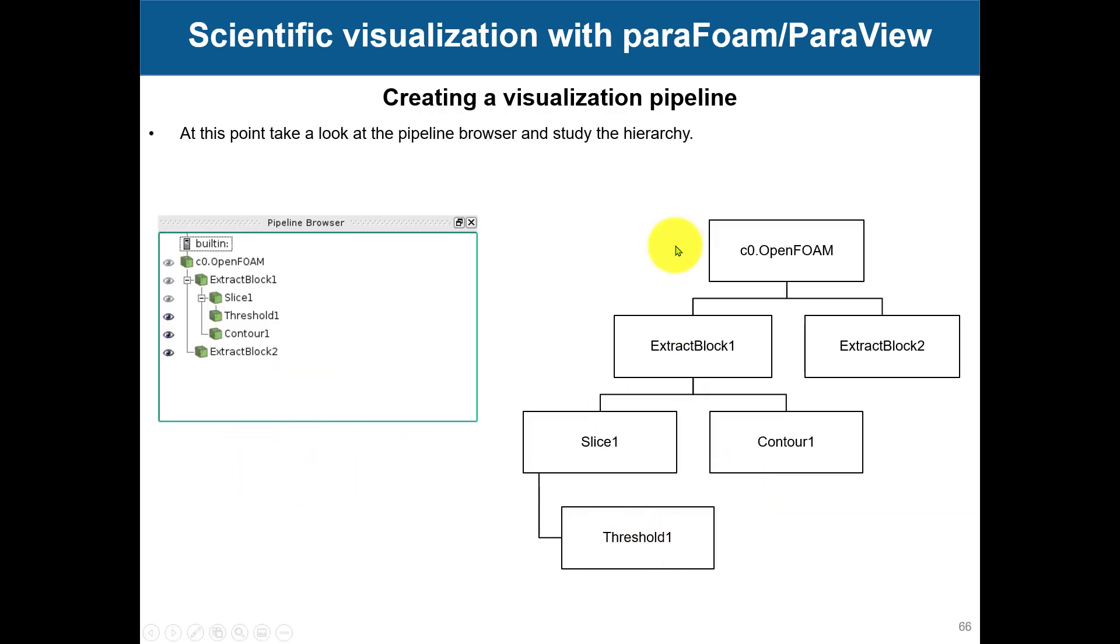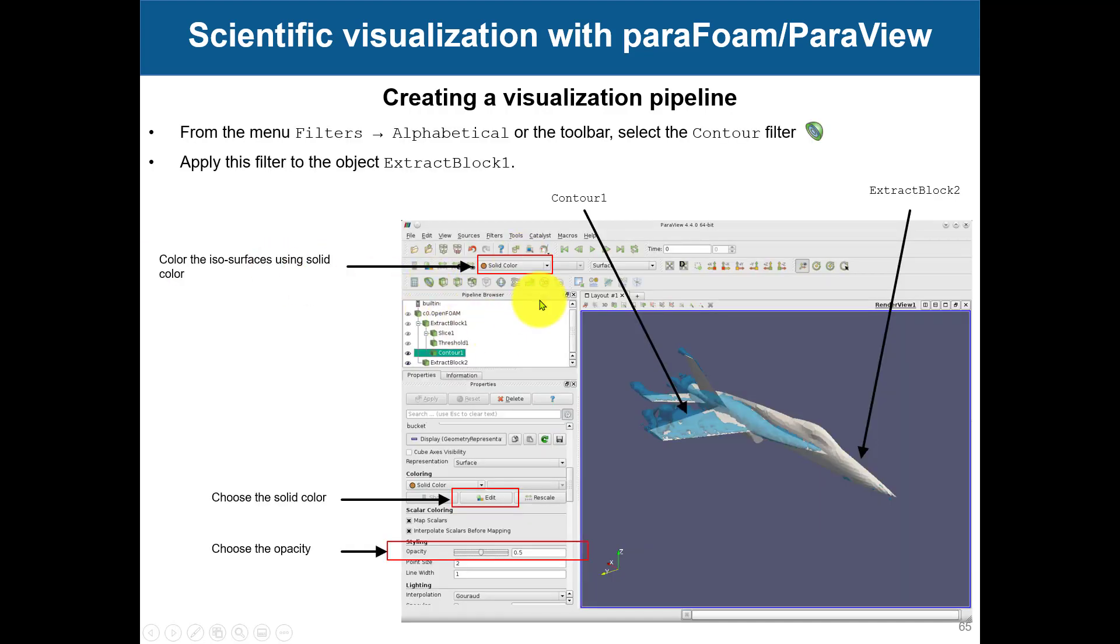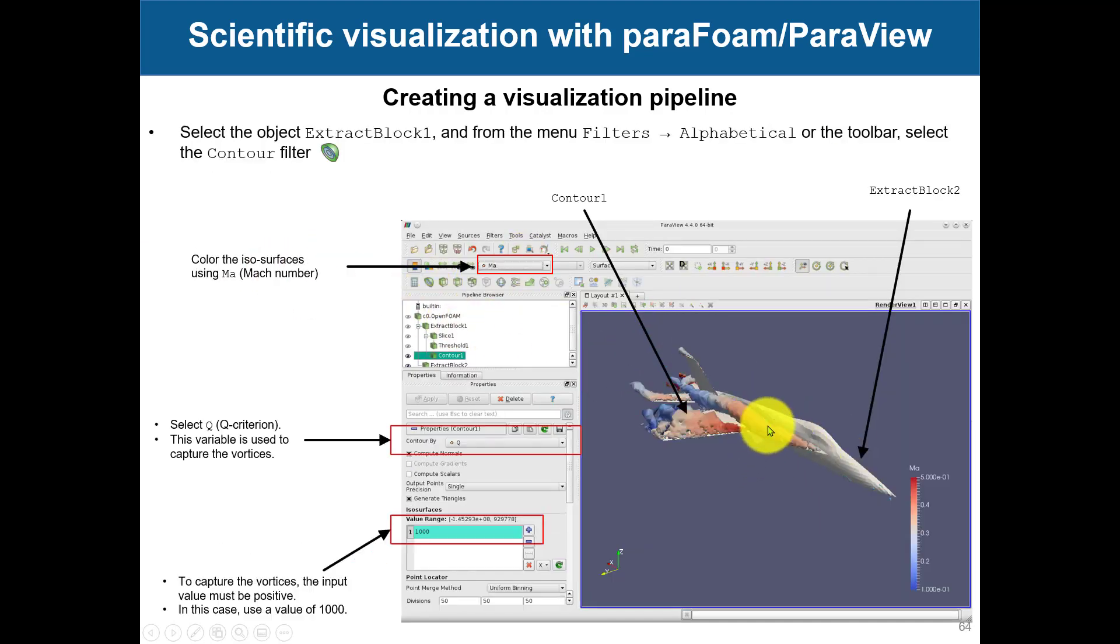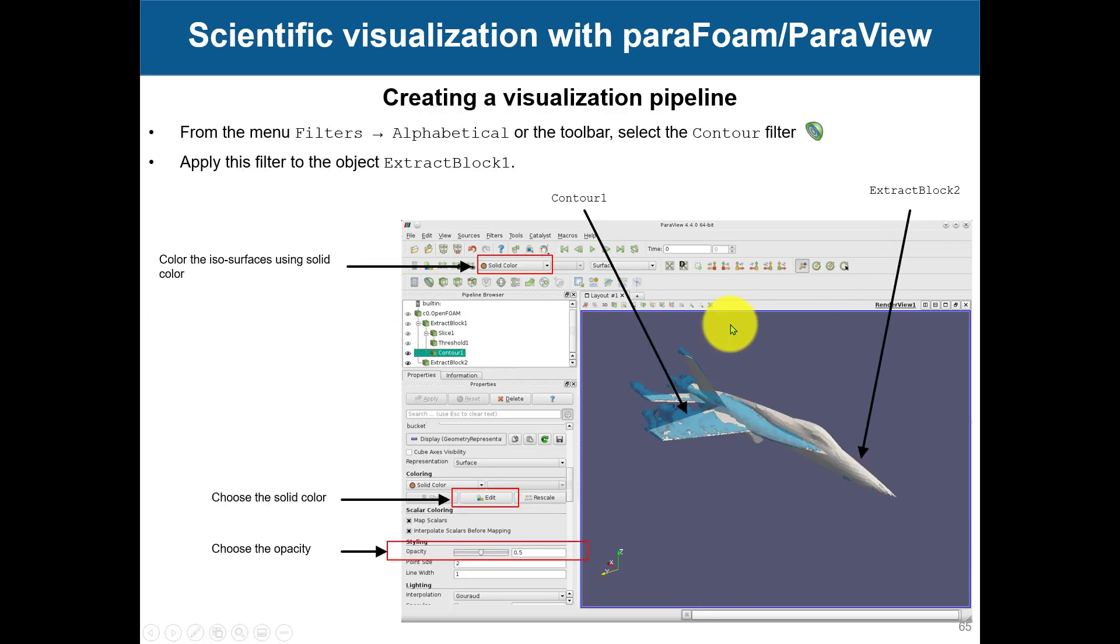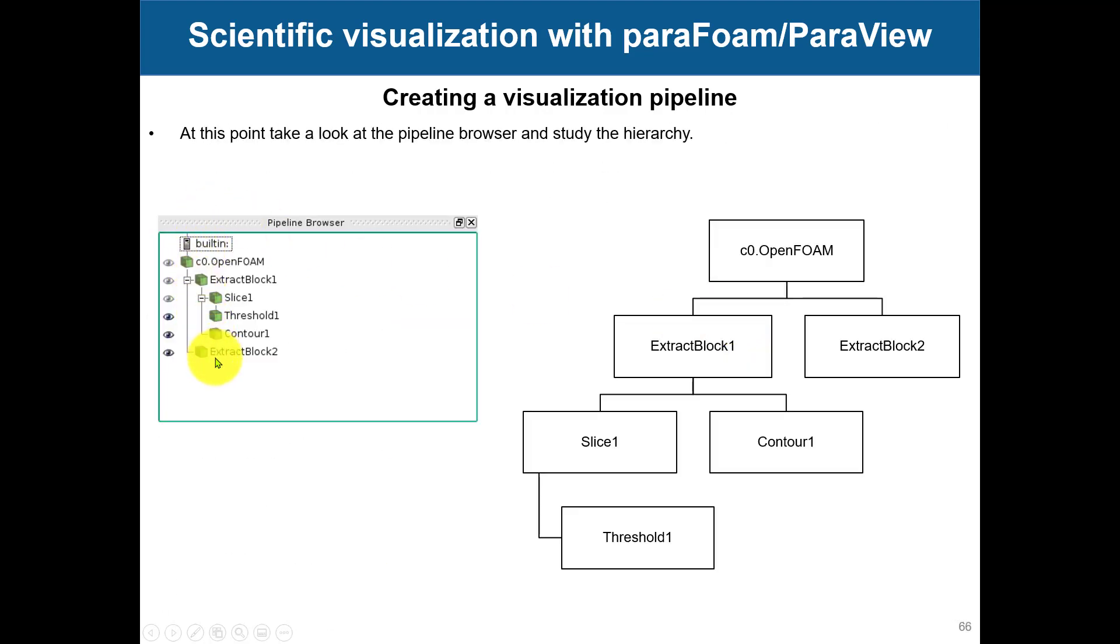And remember that this Q criterion, we can compute it in OpenFOAM, or we can compute it also in ParaView. So we're going to use, to see how to use those utilities. And this is important. Probably you are not already familiar with this. Let's analyze this one because this is the tree that we have now in ParaView, the pipeline browser.